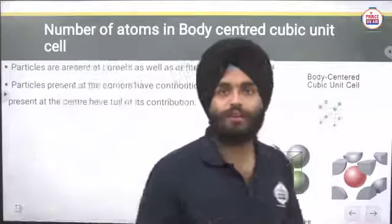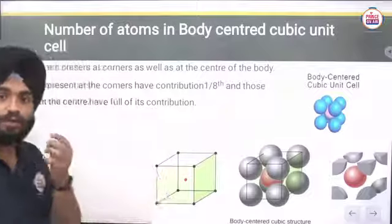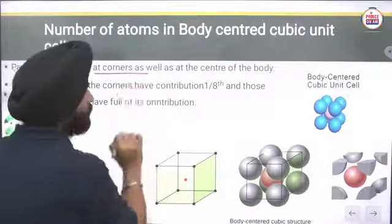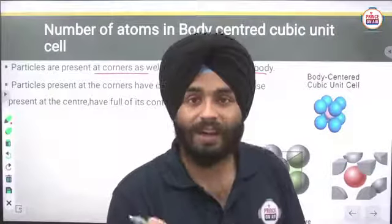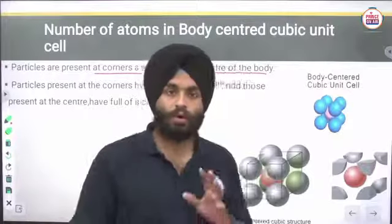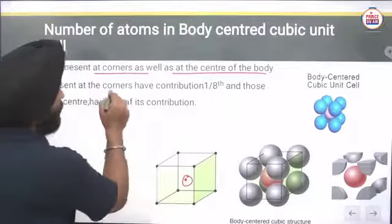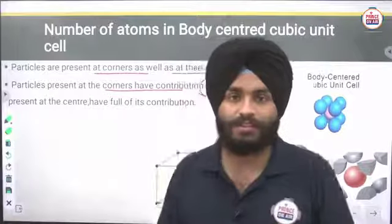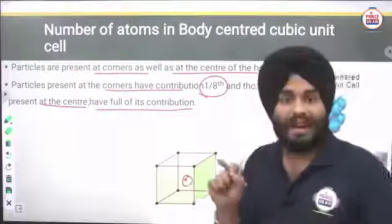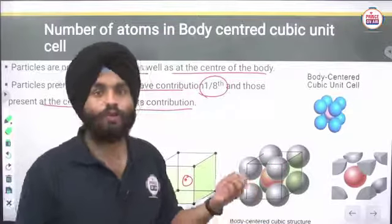Now we will discuss the number of atoms in a body centered unit cell. Body centered unit cells are those in which particles are present at the corners as well as at the center of the body. So we have 8 particles at corners and 1 at the body center.